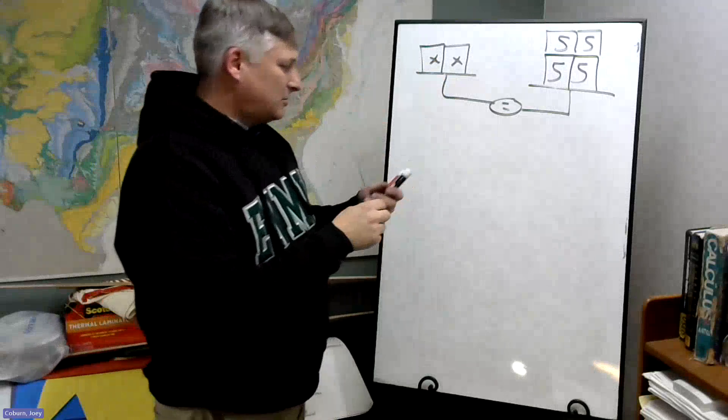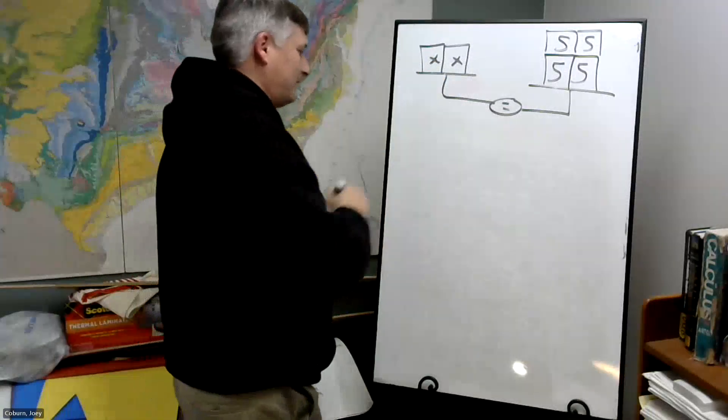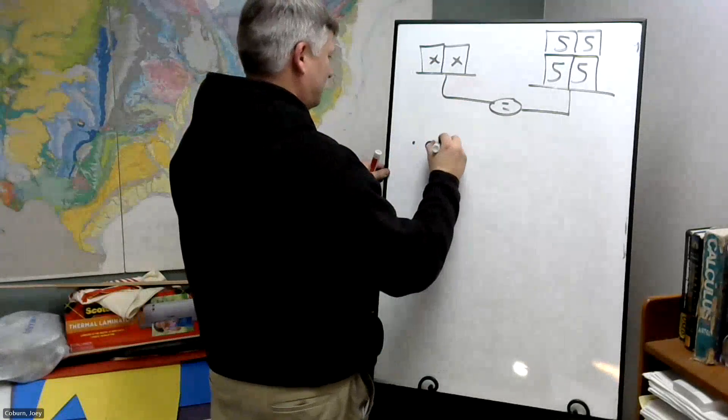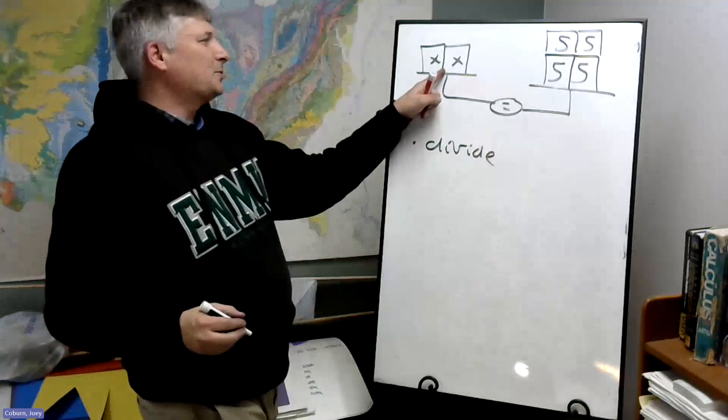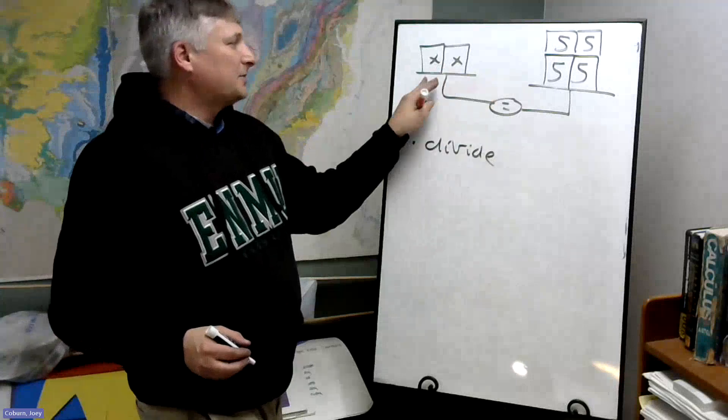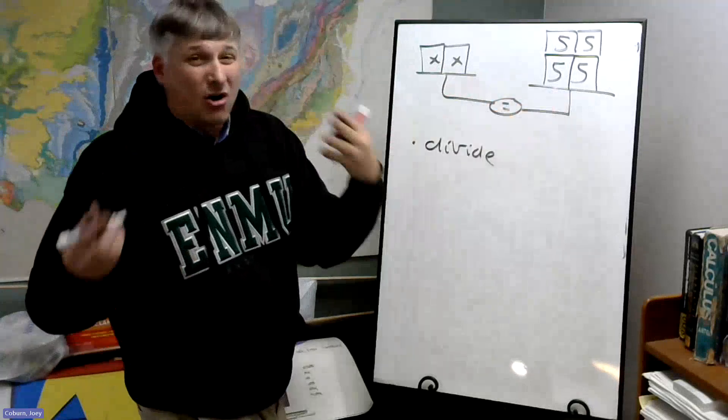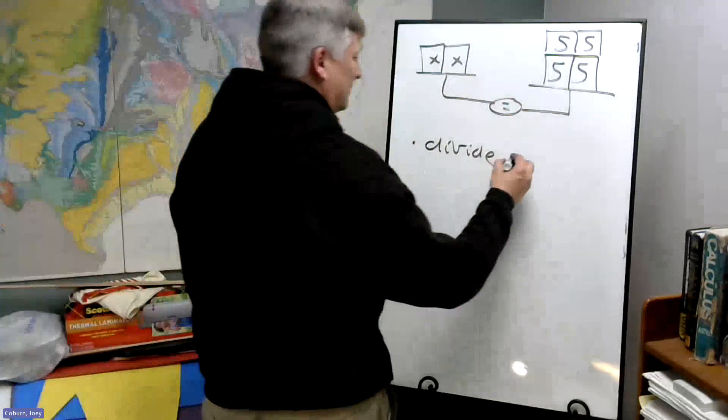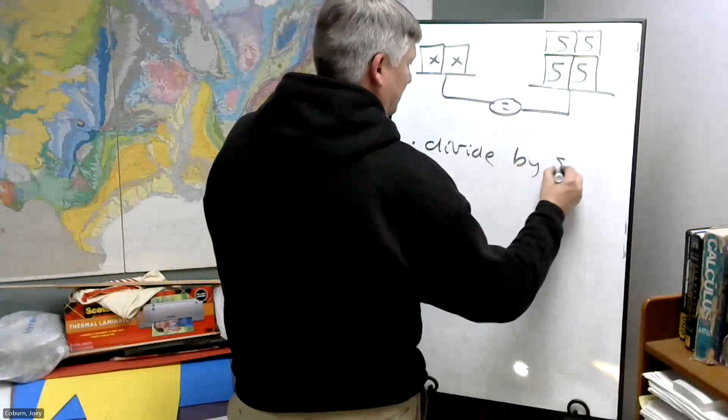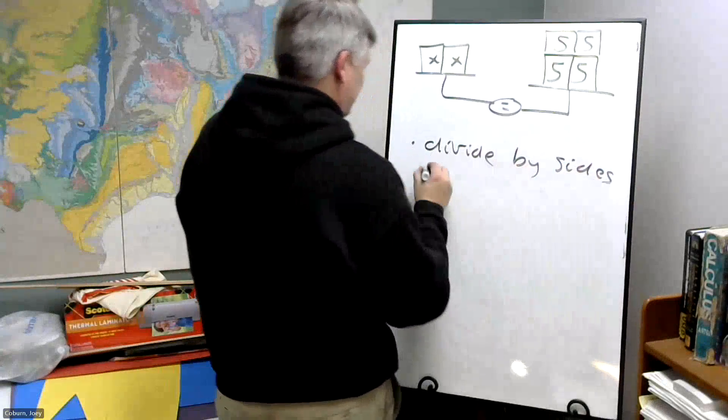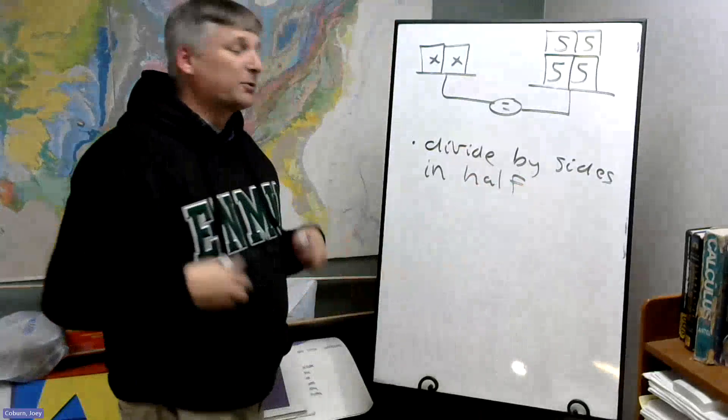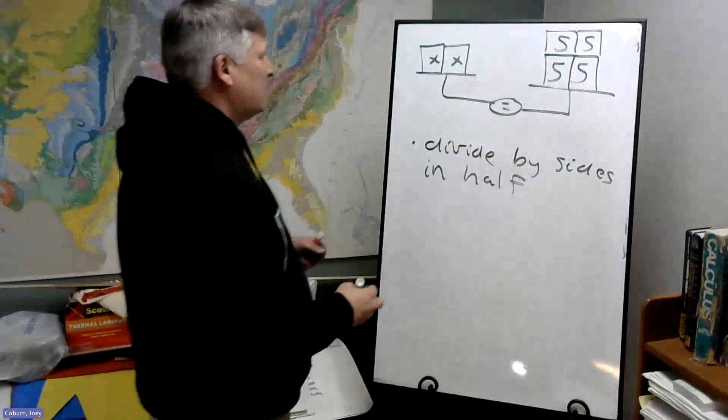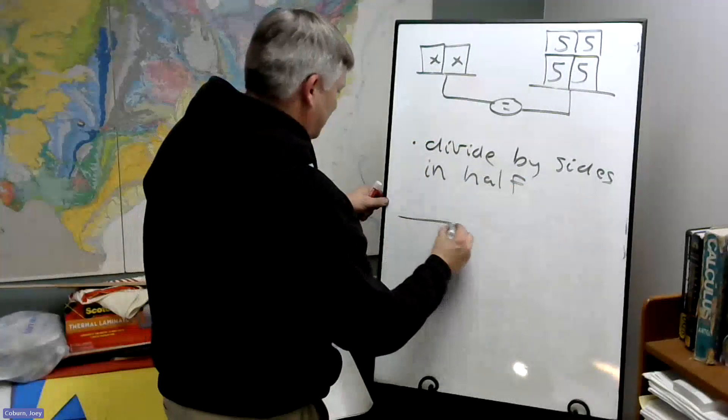So we could divide these by two. And if we cut this weight in half, then on this side, then the weight on this side also has to be cut in half. And divide both sides in half or divide by two. So what that's going to mean.